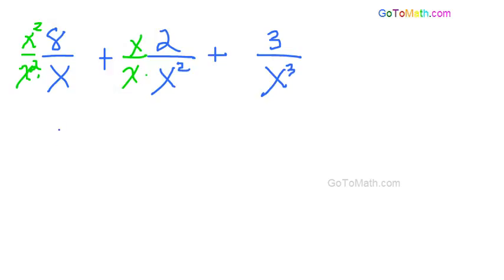So as you can see here, when we join those together, we end up with a common denominator. Now I'm going to reorder this top where we have 8x squared over x cubed.